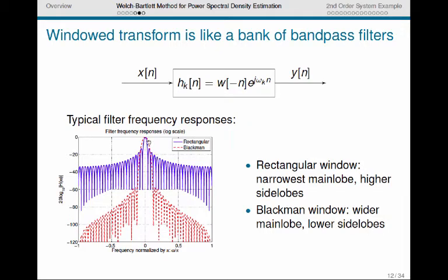If we use a Blackman window instead, we get the red curve here, and you see we have much lower side lobes. So this bandpass filter will tend to reject everything out here much more than the rectangular window does.